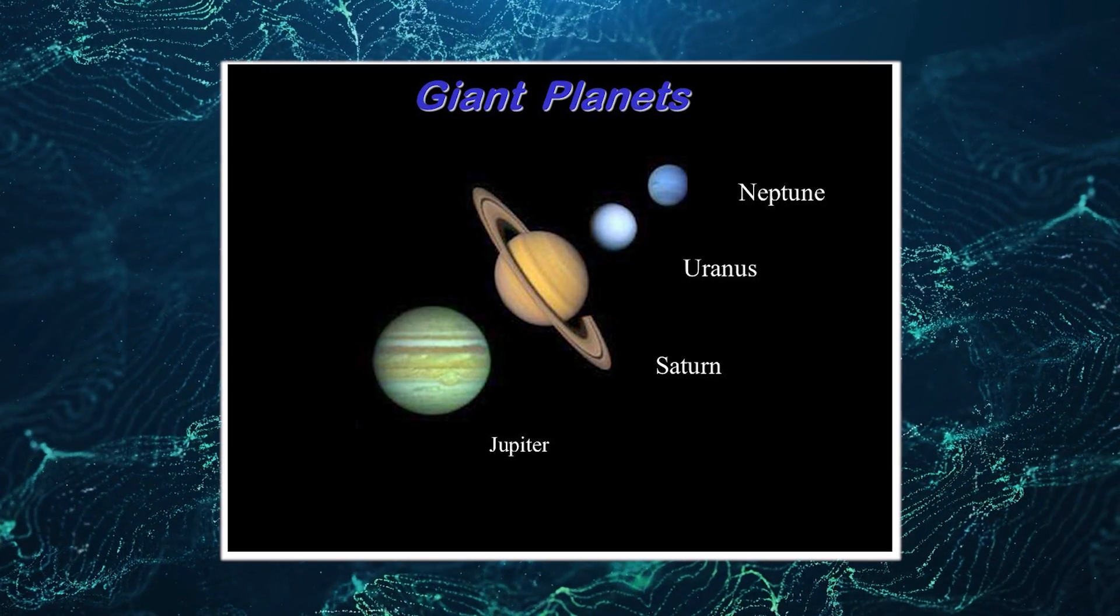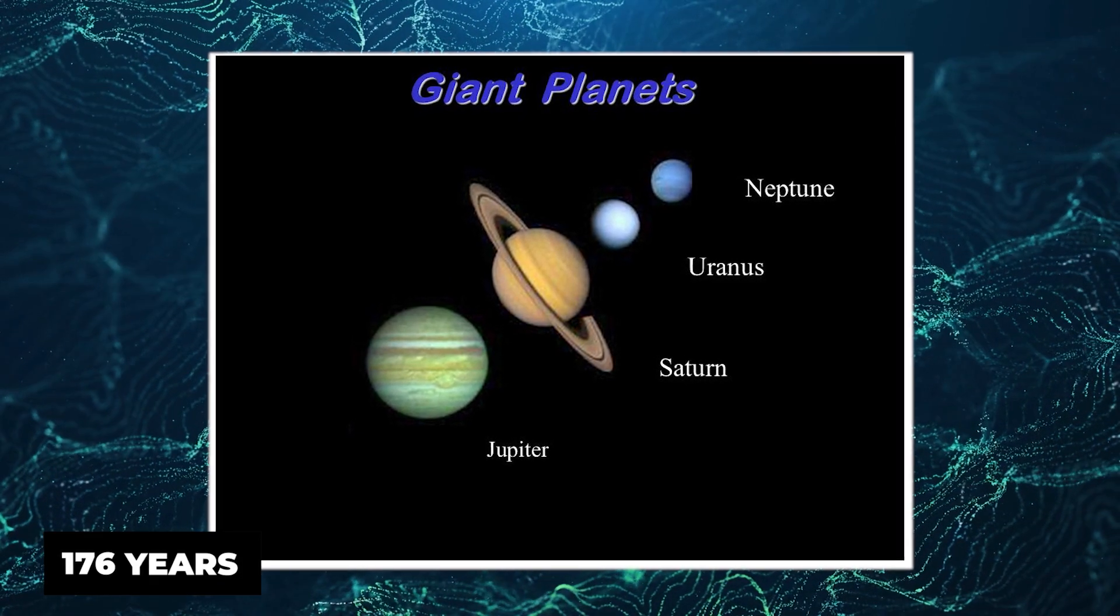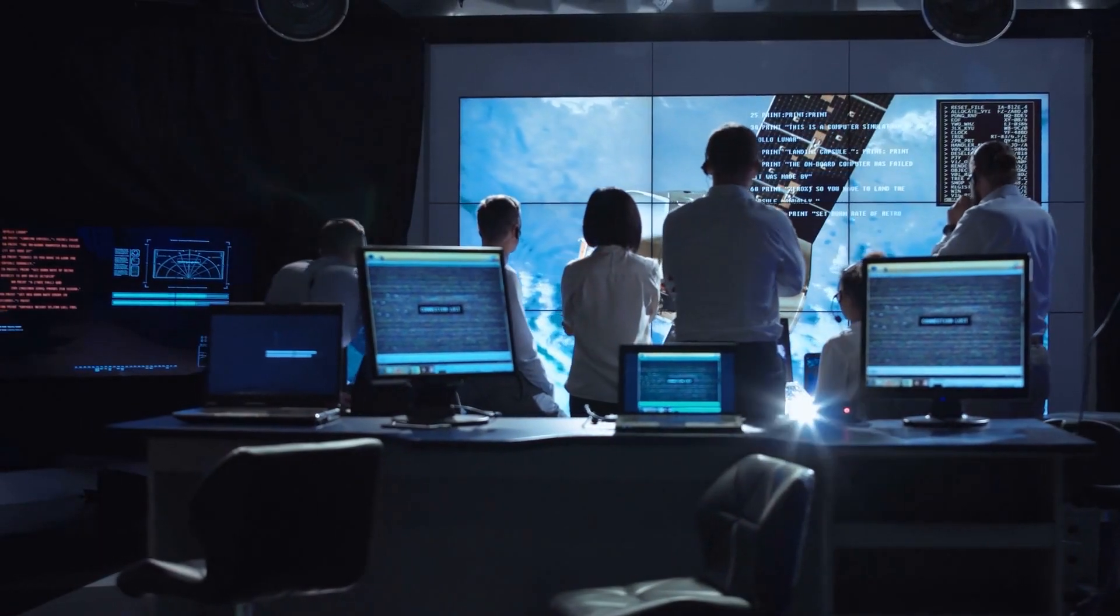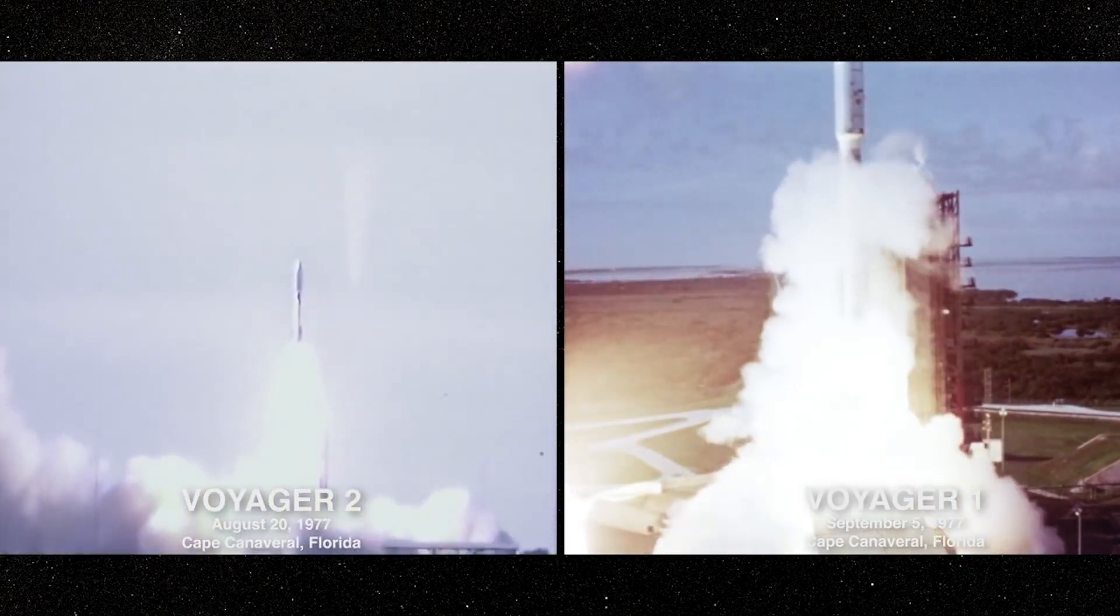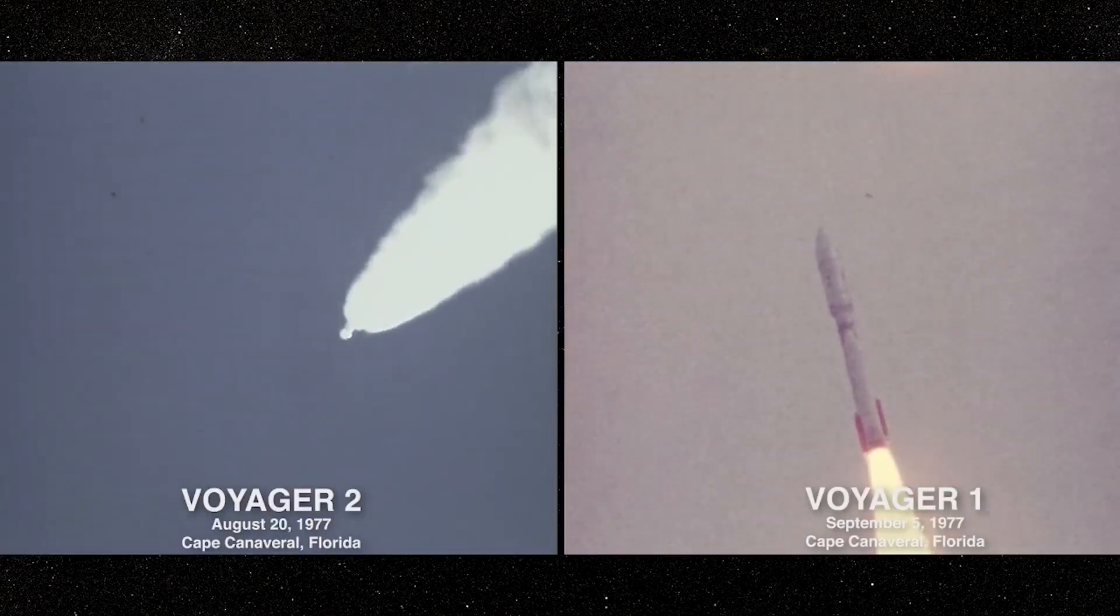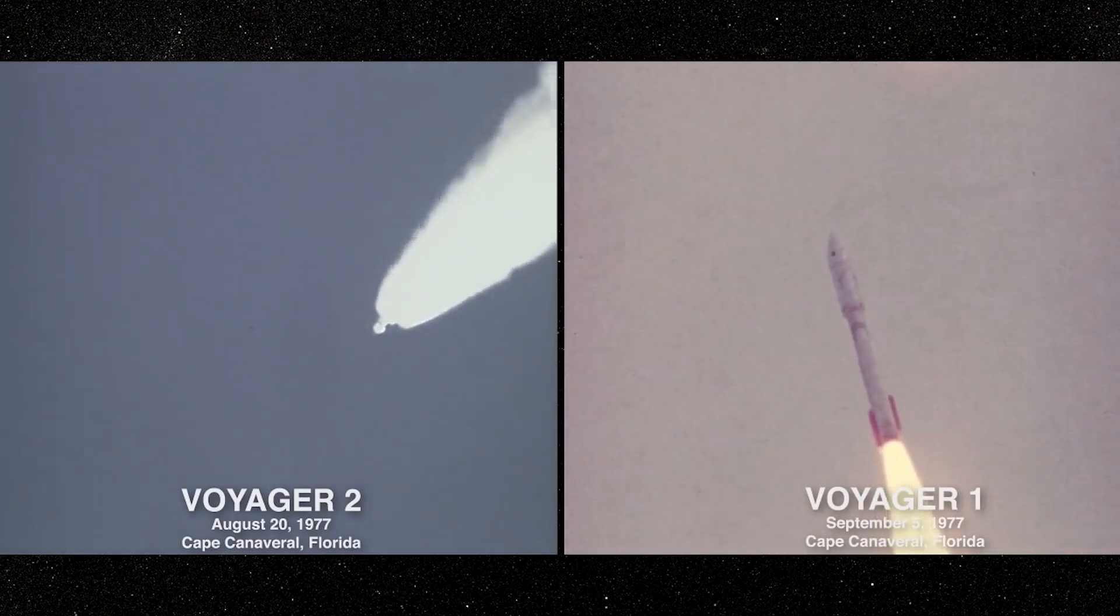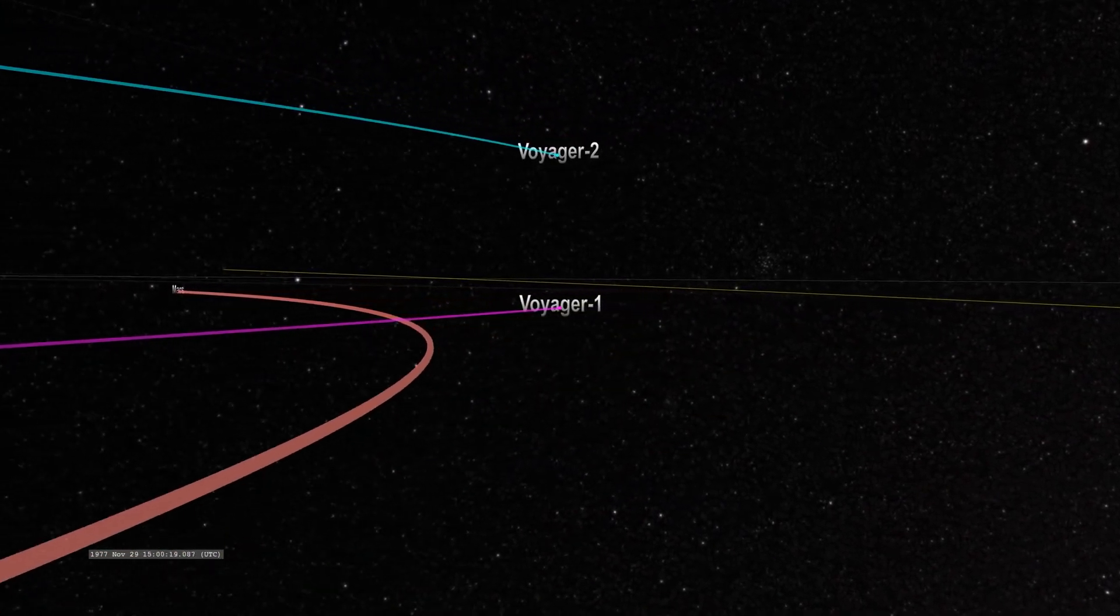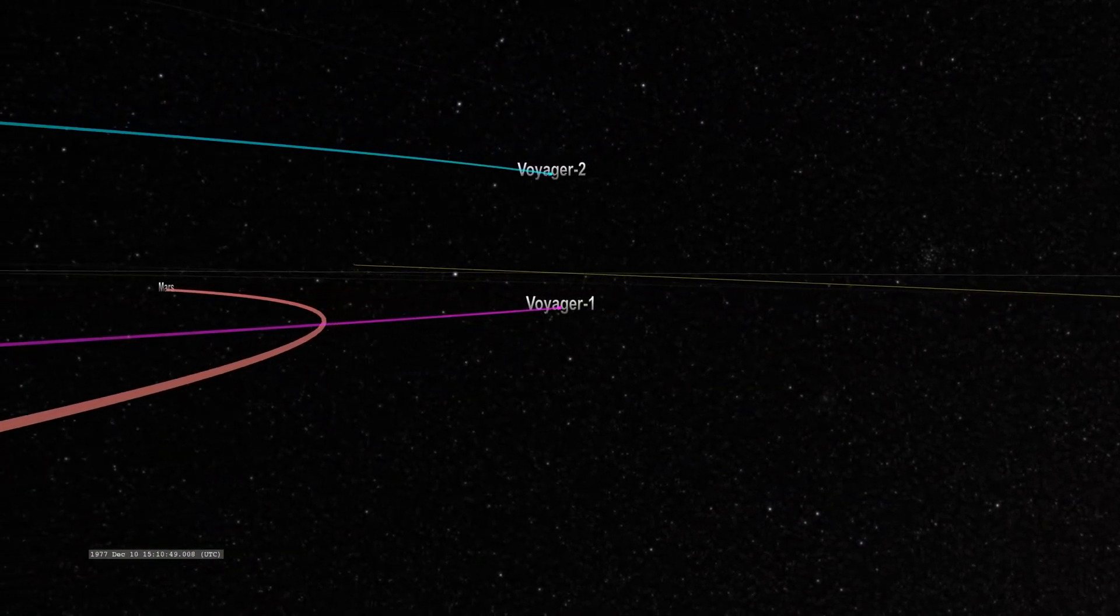But there was a catch: this alignment only occurs once every 176 years. Not wanting to miss this extraordinary chance, NASA swiftly took action, launching two identical spacecraft named Voyager 1 and Voyager 2 within a short span of 15 days. Little did they know that these twin explorers would rewrite the record books in the history of space missions.